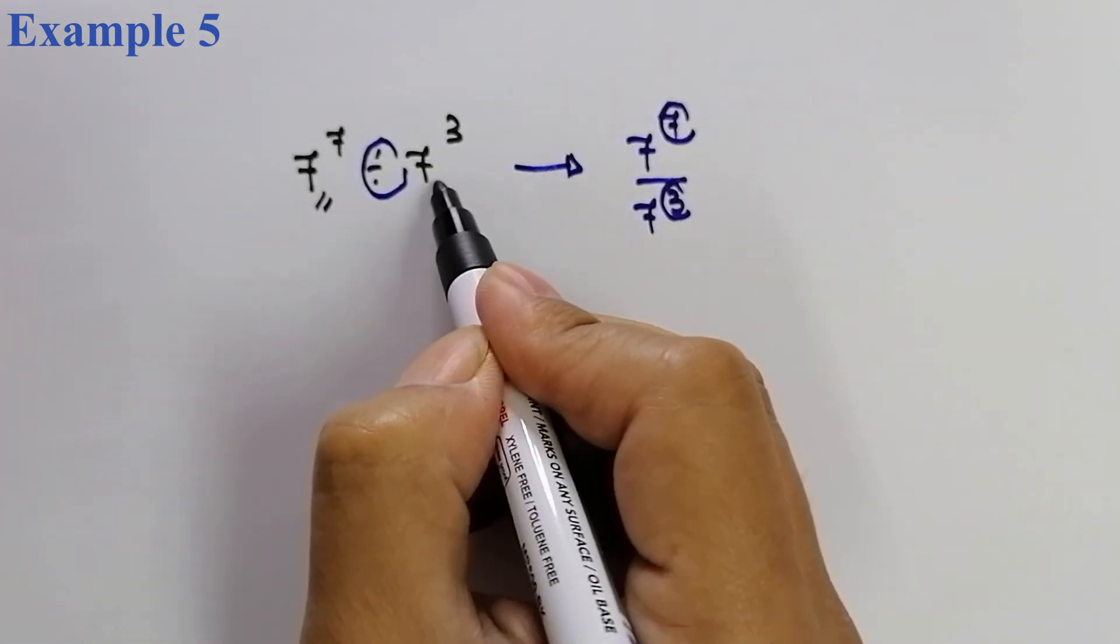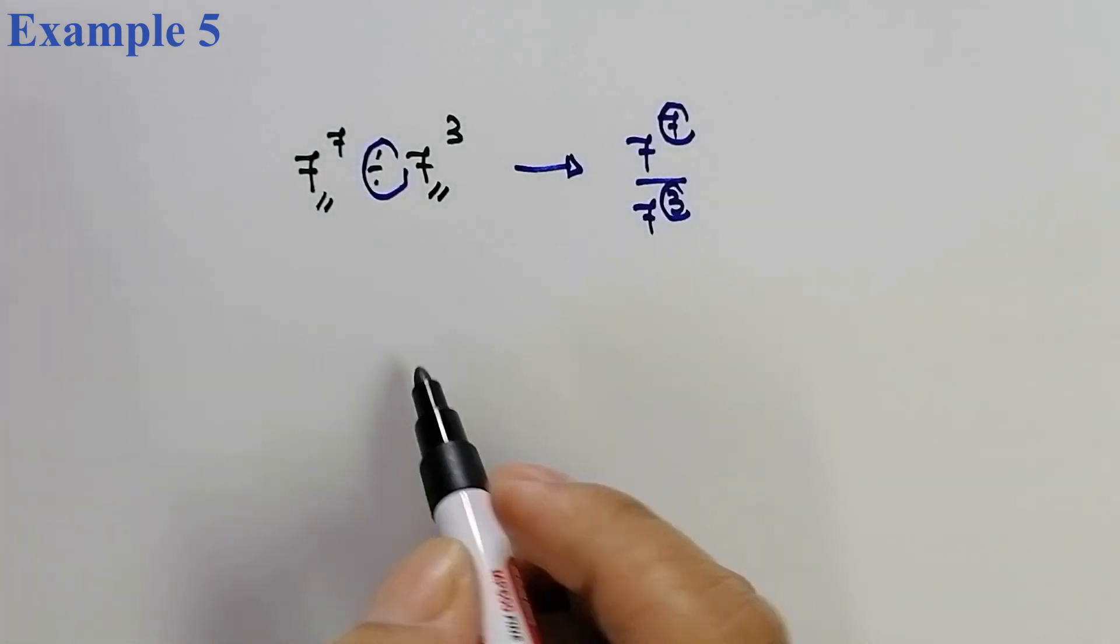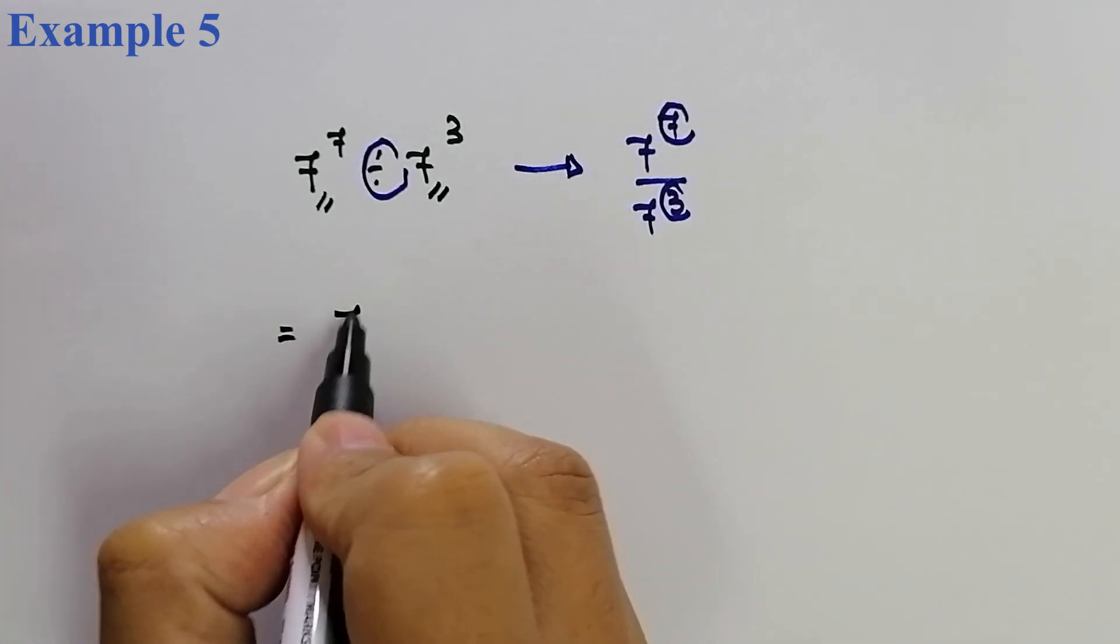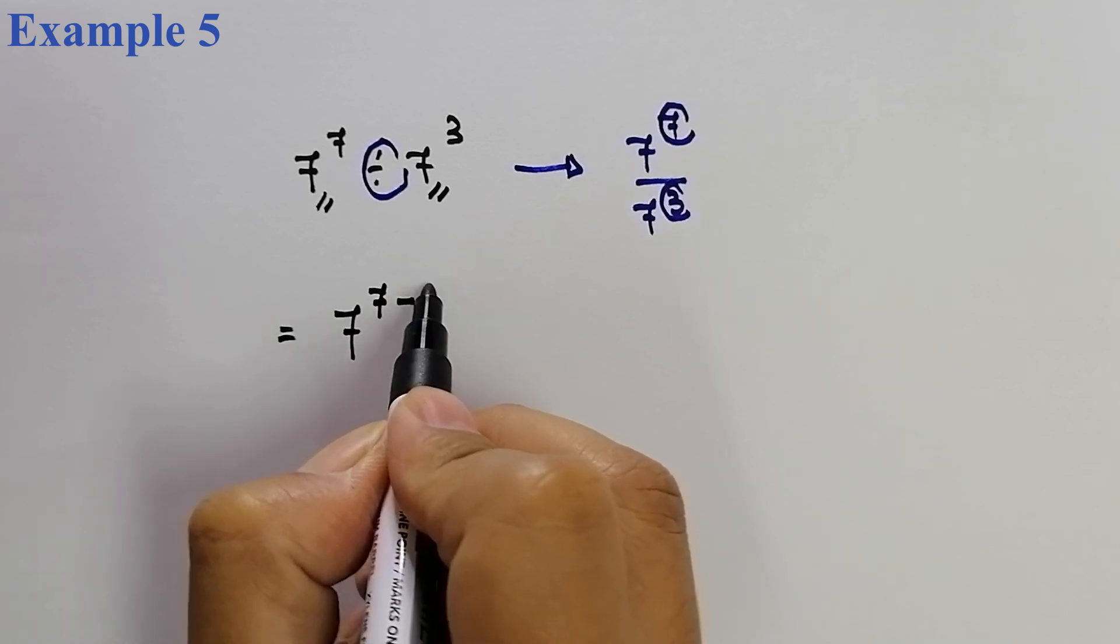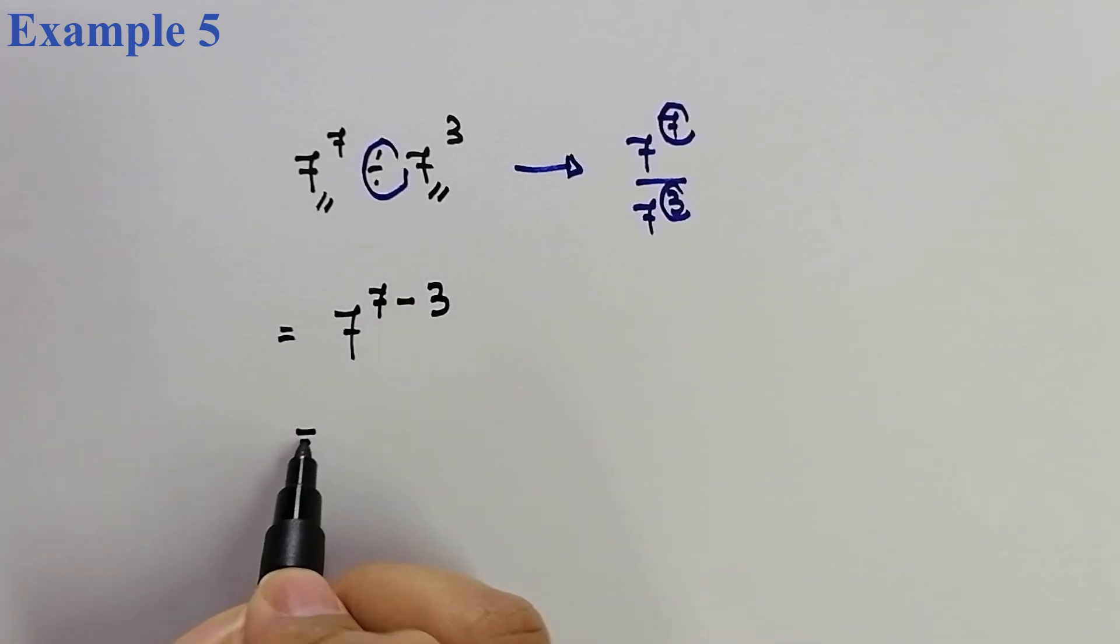Kenapa kita boleh buat? Sekali lagi diulang. Because base dia adalah sama. Persamaan ini adalah 7 pusat 7, tolakkan dengan 3. So, kita akan dapat 7 pusat 4. Bila ditekan calculator, jawapan akhir yang sepatutnya kita dapat adalah 2401.